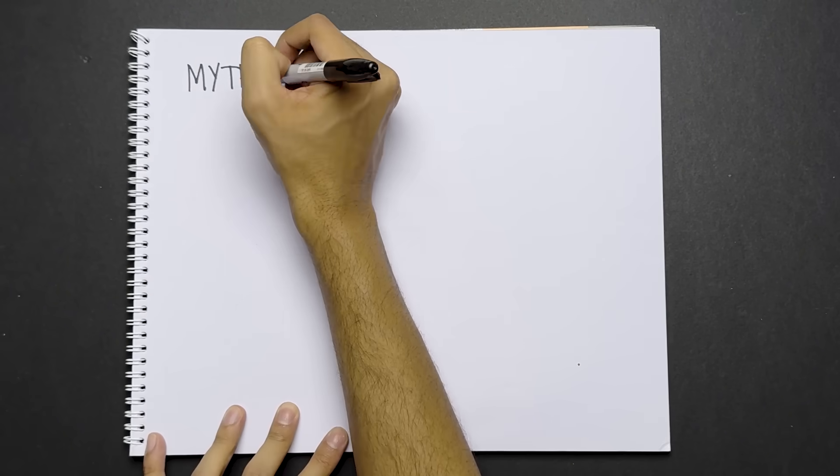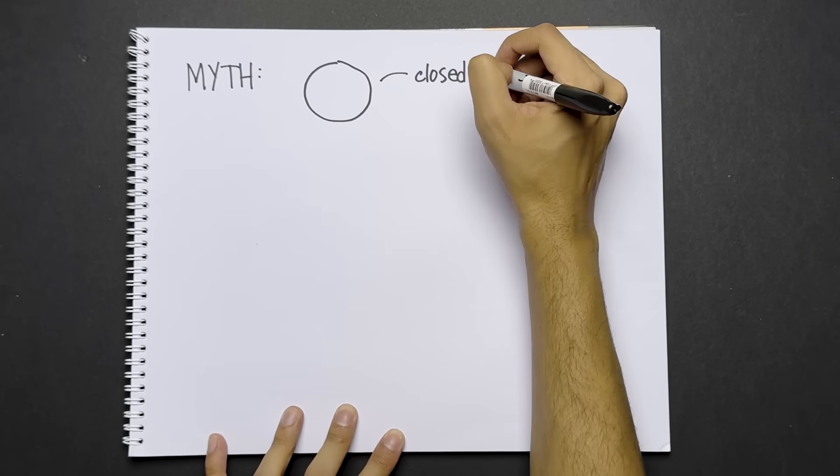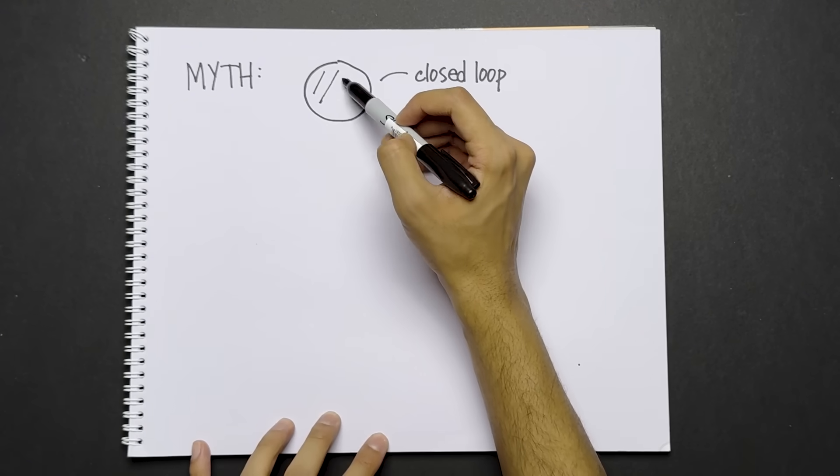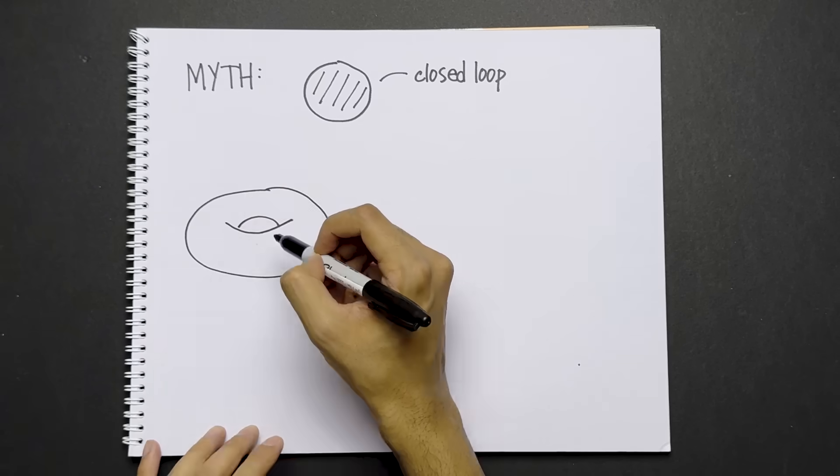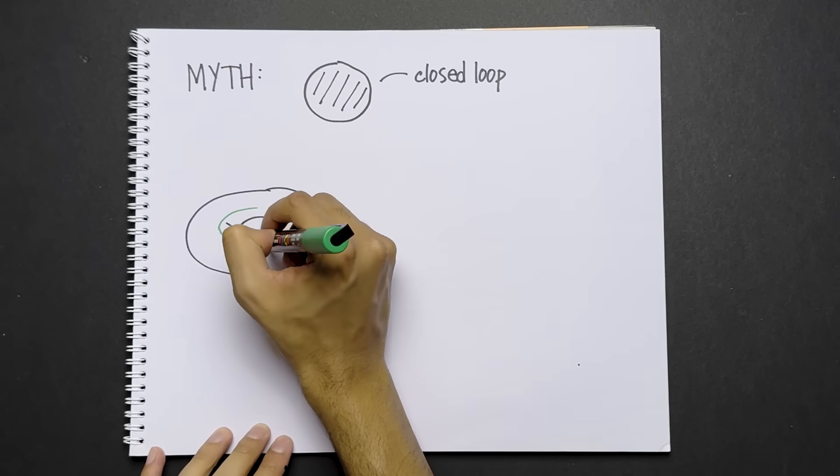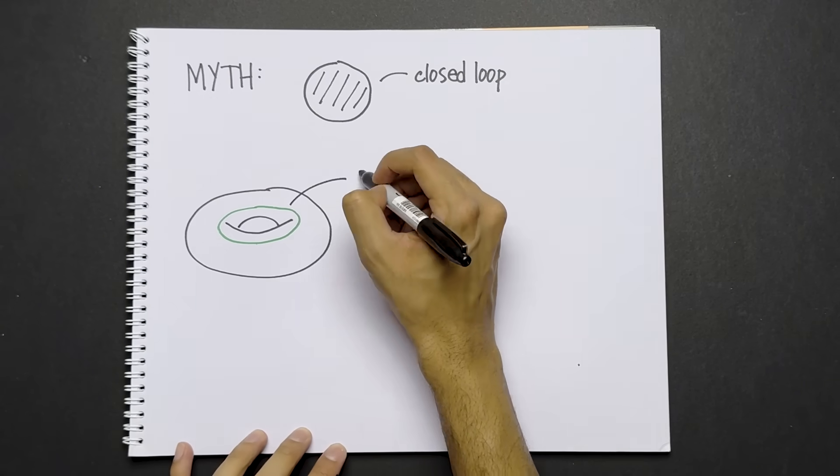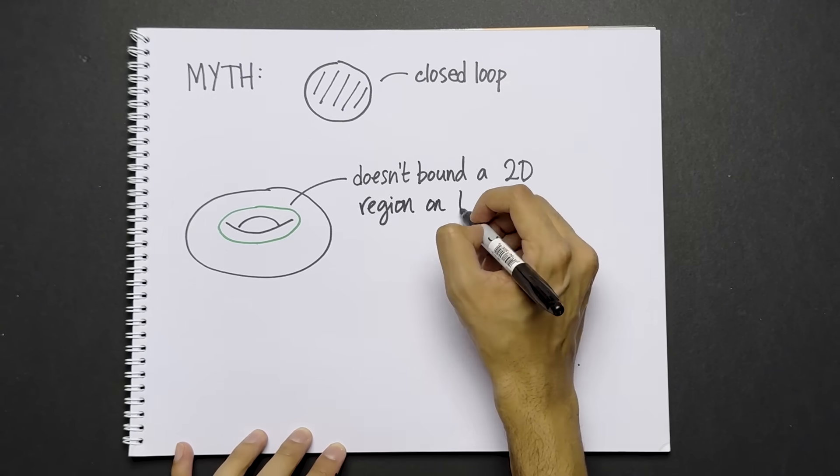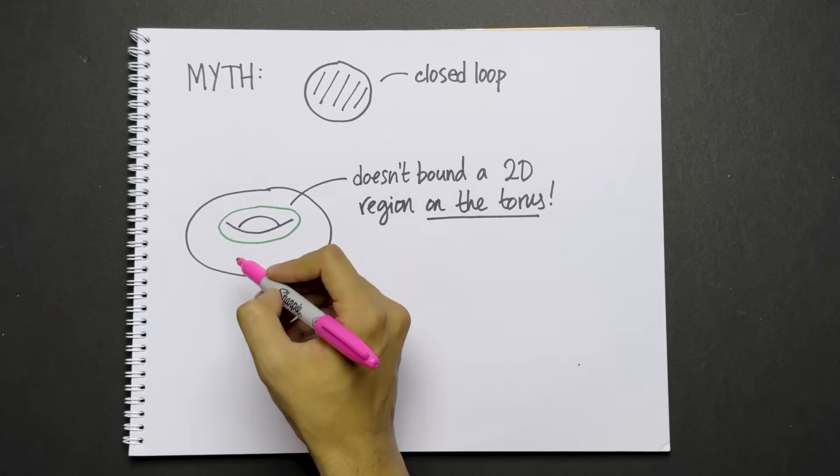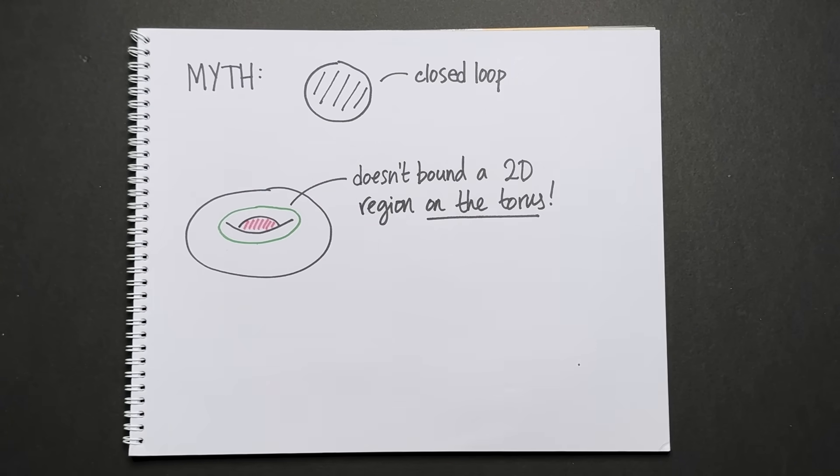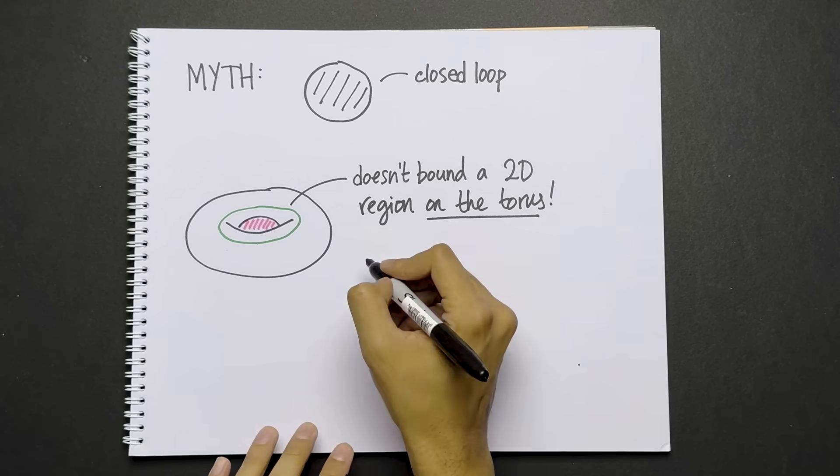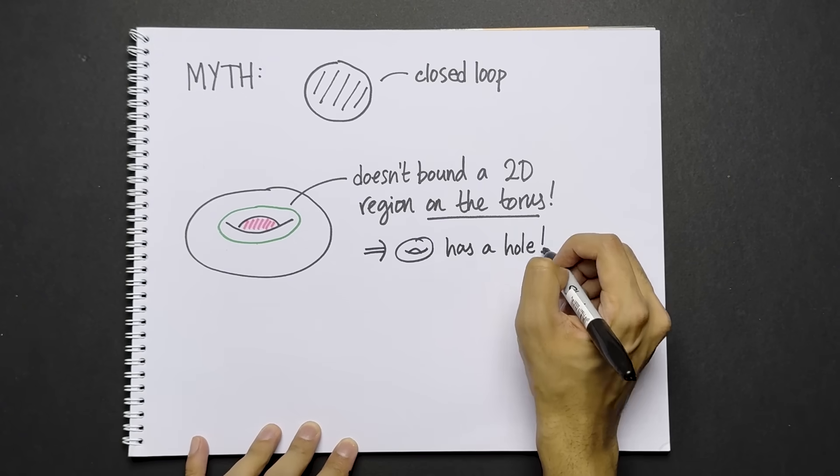How would you convince the ant that the torus has a hole? Homology answers this question. Homology is based on the following myth. If you have a closed loop in a space, it must bound a 2D region in your space. But if your space has a hole, this is not true. Consider the loop that goes around the hole in the middle of the torus. This doesn't bound a 2D region on the torus. Of course, it bounds this pink region which is in the space around the torus, but that doesn't count because it's not literally on the torus. Therefore, the torus has a hole.